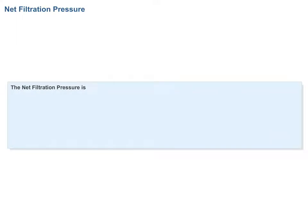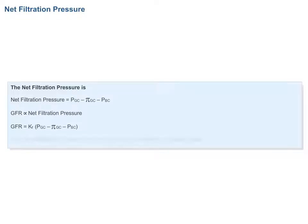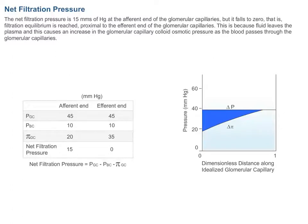The net filtration pressure equals PGC minus PI-GC minus PBC. GFR is directly proportional to net filtration pressure, and GFR equals KF times (PGC minus PI-GC minus PBC), where KF is the ultrafiltration constant — the product of permeability and surface area. The net filtration pressure is 15 mmHg at the afferent end of the glomerular capillaries, but falls to zero — that is, filtration equilibrium is reached — proximal to the efferent end. This occurs because fluid leaving the plasma increases the glomerular capillary colloid osmotic pressure as blood passes through the capillaries.